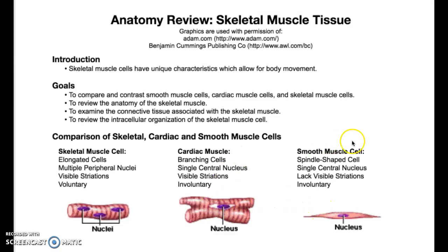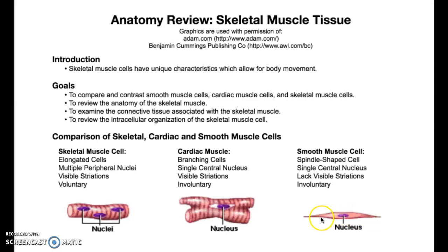The third type of muscle was smooth muscle. Smooth muscle has a spindle-shaped cell. It has a single nucleus. You don't see any stripes or striations here. And like cardiac muscle, thankfully, we do not have to control our smooth muscle. So those are the three types of muscle.